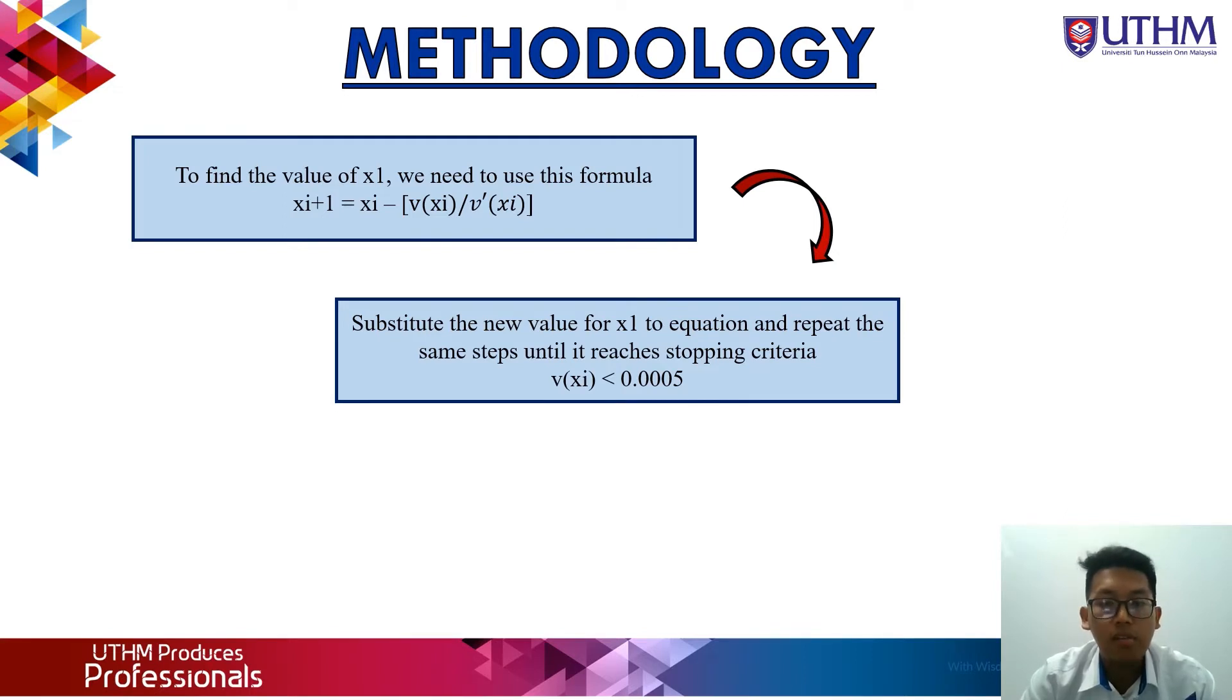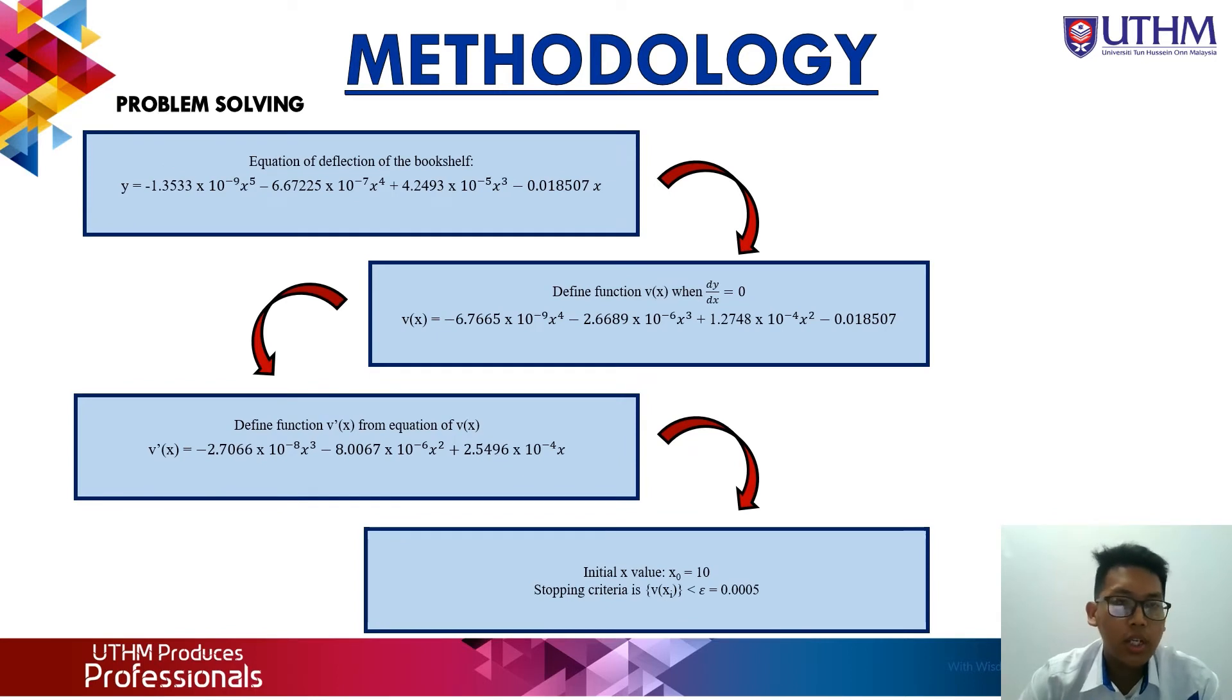Sixth, substitute the new value x₁ into the equation and repeat the same steps until the stopping criteria f(x_i) < 0.0005 is met. Next, methodology for problem solving: First, determine the equation of deflection of the bookshelf. Second, define function y(x) when dy/dx = 0. Third, define function y'(x) from the equation of y(x). Fourth, define initial x value x₀ = 10 and stopping criteria f(x_i) < 0.0005.